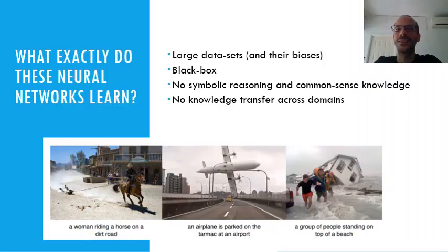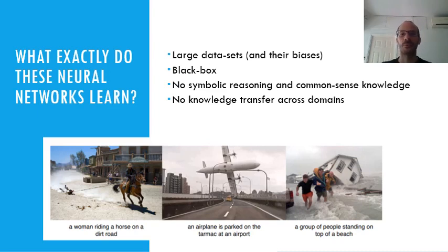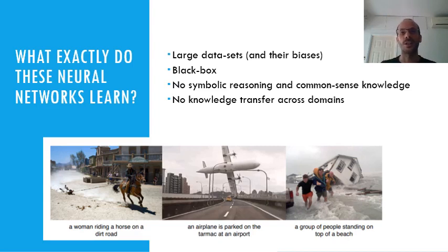So what exactly do these neural networks learn? They learn from large datasets, and they would naturally learn the biases of these datasets. We don't know exactly how this information is stored. There is no way for these networks to do any symbolic reasoning, and it's also hard to transfer knowledge from one network to another.